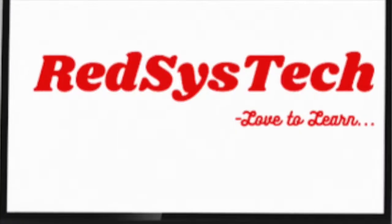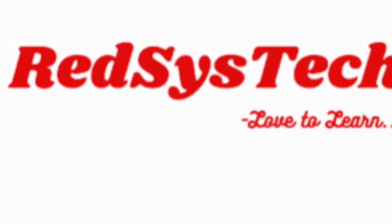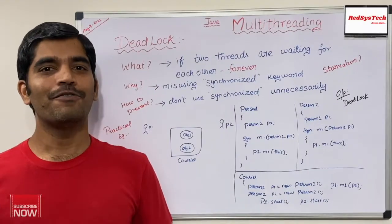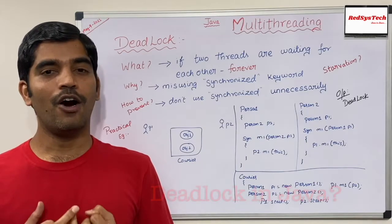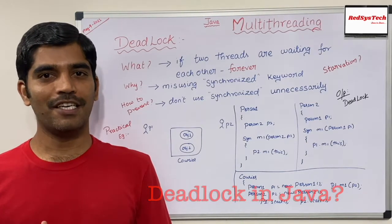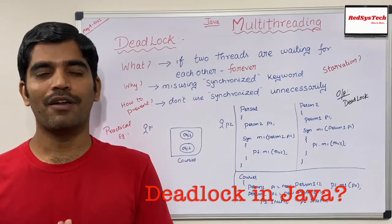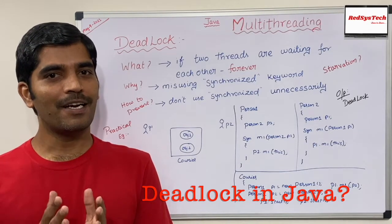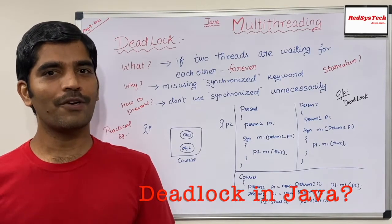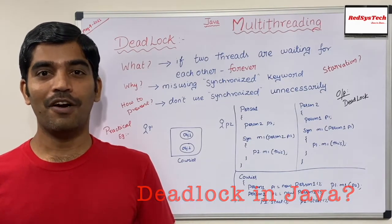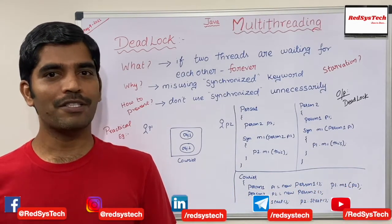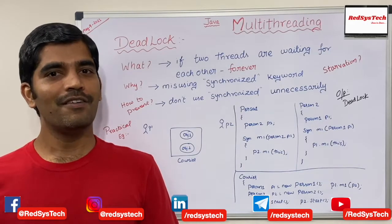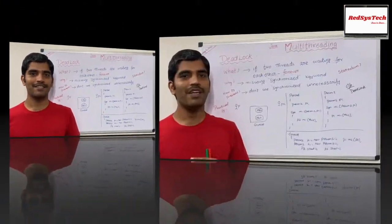In this video we are going to learn what the deadlock condition in Java is, why it occurs, and how we can prevent it. I'm going to explain with a simple example so you can correlate the deadlock condition with a real-time scenario versus a Java program. We are also going to see what starvation is in Java and the difference between deadlock and starvation. I will demonstrate how the deadlock condition occurs by writing code.